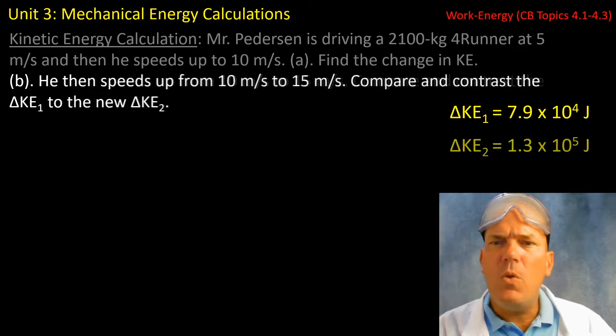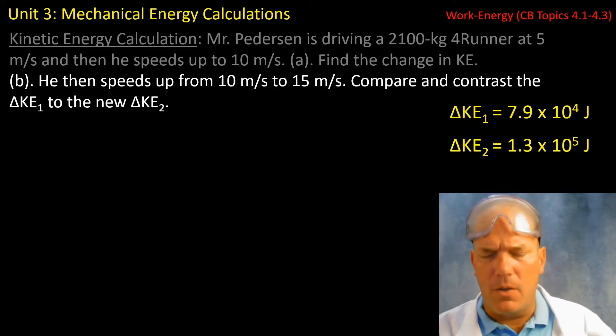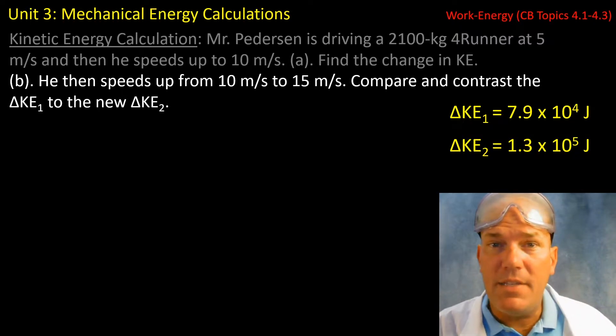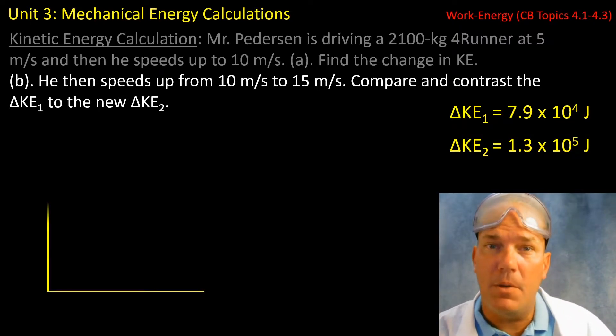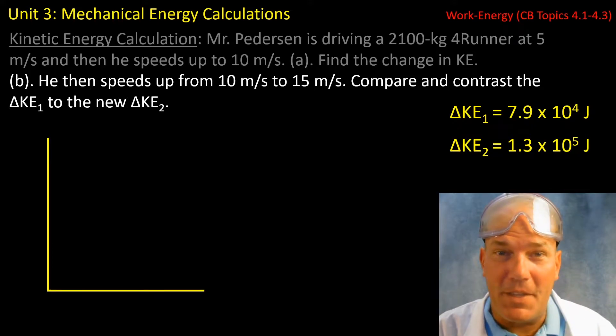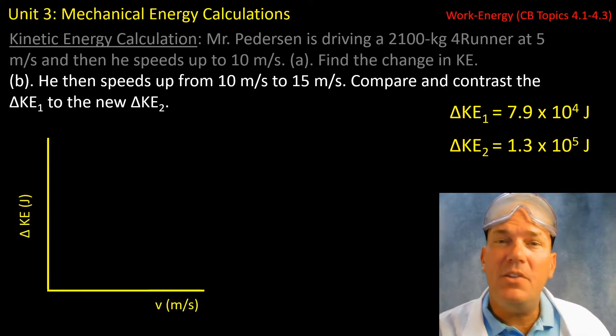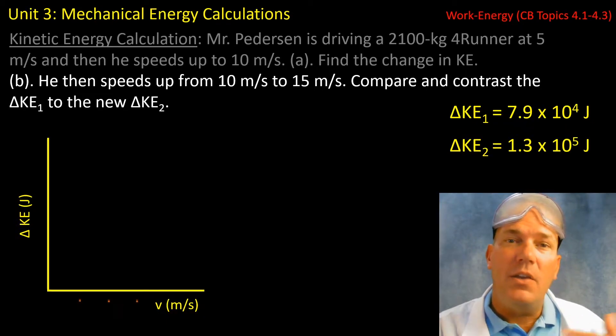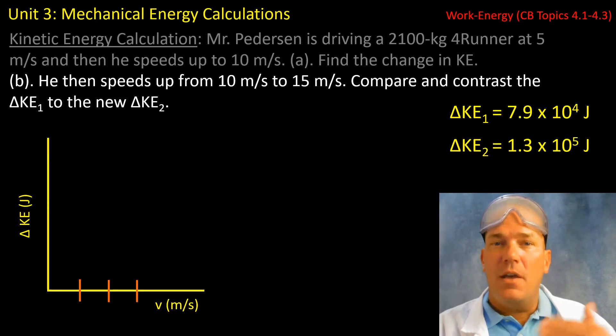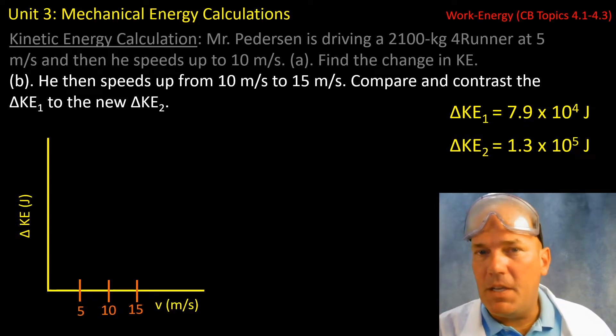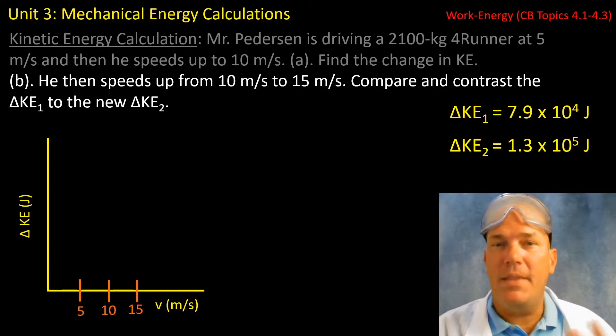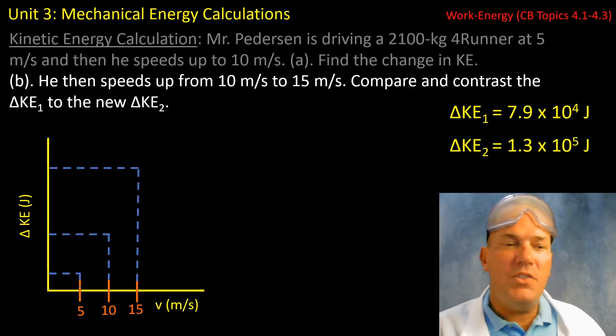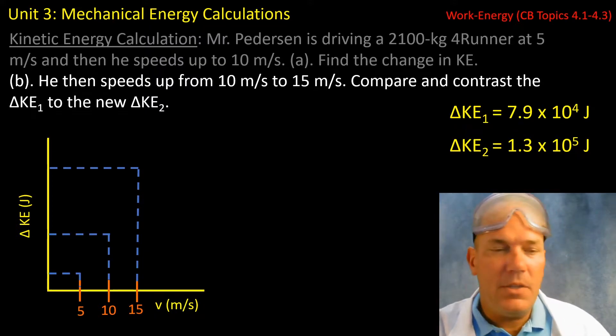Which still seems a bit odd given that the change in speeds were identical between part A and part B. Let's look at this graphically. I have kinetic energy on the y-axis. I have velocity on the x-axis. I also have increments of 5, 10, and 15 meters per second on the x-axis.